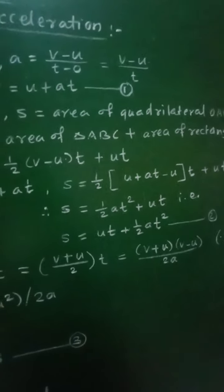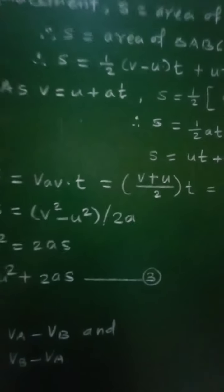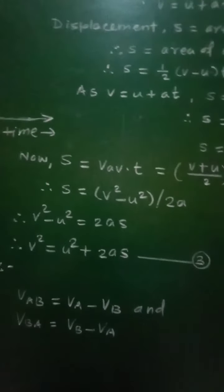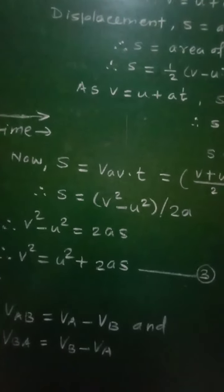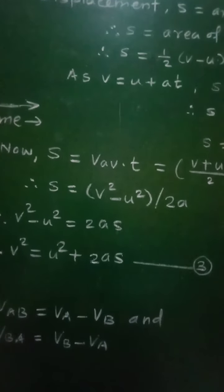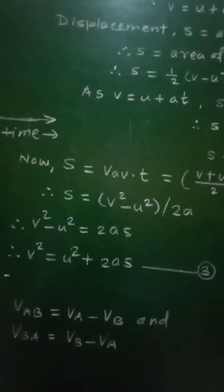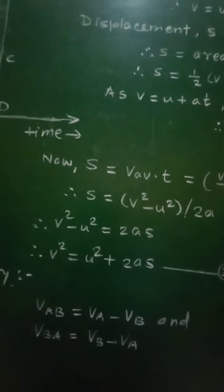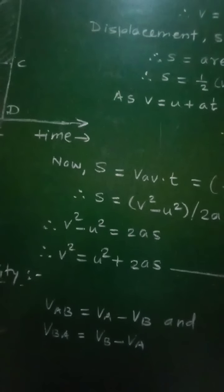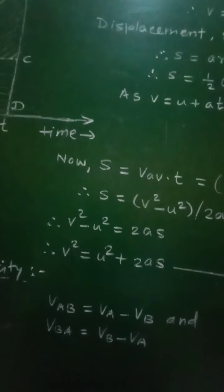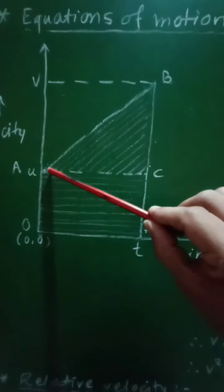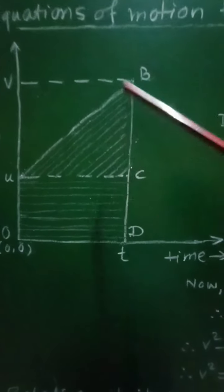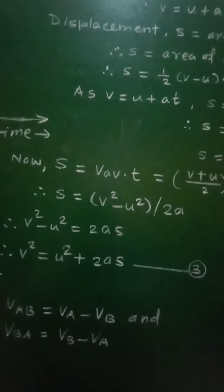Equation number 2 represents the second equation of motion, that is the second kinematical equation. Now, as the acceleration is constant for the motion of that object, the velocity is increasing linearly with time. We can consider here average velocity — v average — to calculate the displacement, since velocity is increasing from u to v linearly.